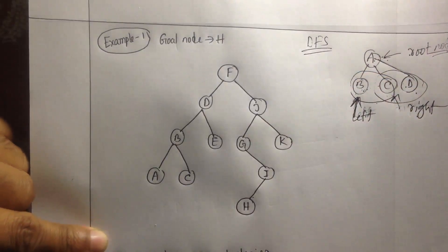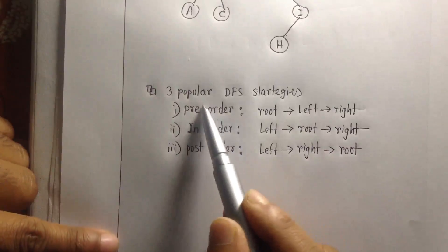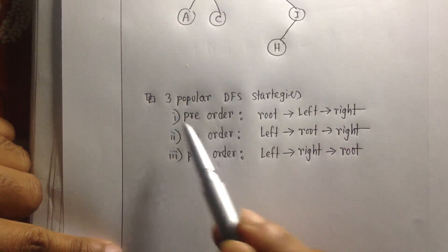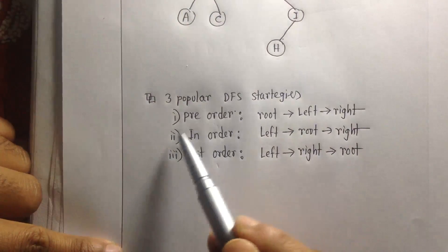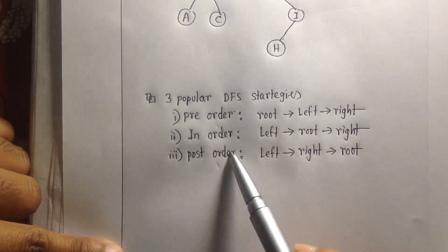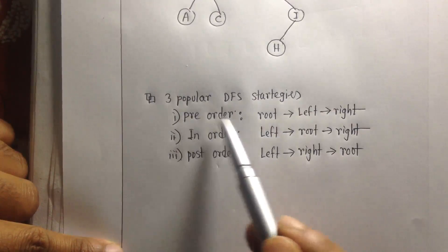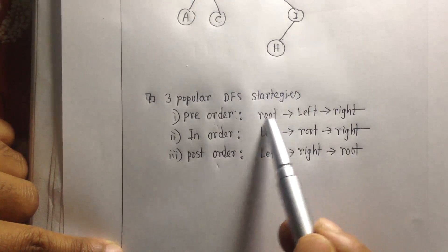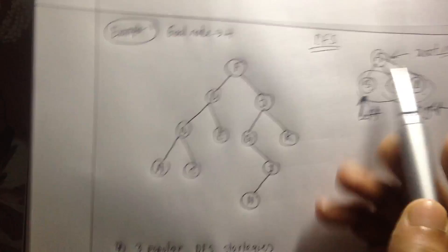How does DFS work? There are three popular strategies you can follow while using DFS: you can follow pre-order, in-order, or post-order. If you follow pre-order, then you start with the root node, then go to the left, then go to the right.